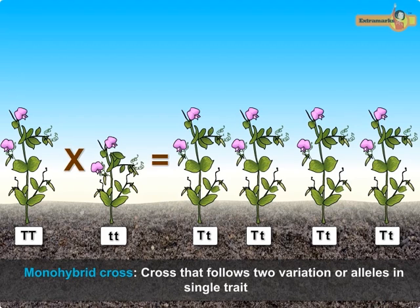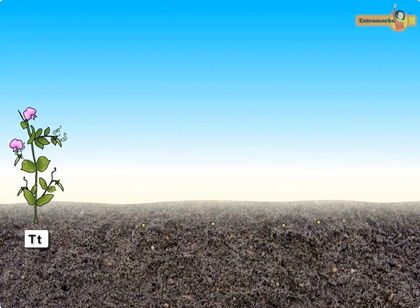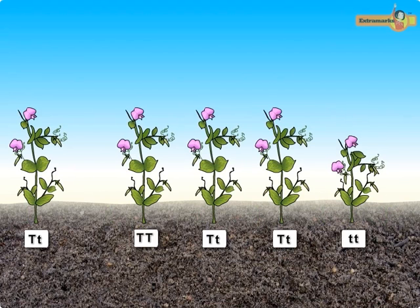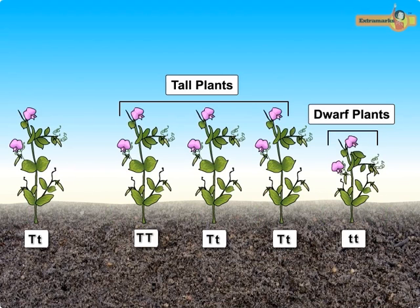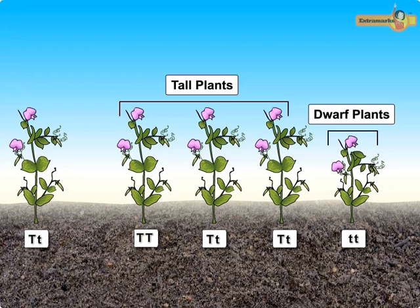It involves two variations in a single trait, which in this case is plant height. When plants of the F1 generation are allowed to mature and self-fertilize, both tall and dwarf plants appear in the second filial or F2 generation in the ratio of 3:1. This indicates that the alleles for both tallness and dwarfness were inherited by the F2 plants, but only the trait of tallness was expressed.